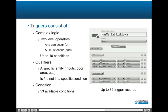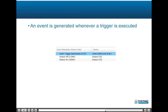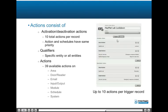An event is generated whenever a trigger is executed, informing the operator the action took place. Actions consist of activation and deactivation actions; the system supports up to 10 total actions per record. Actions and schedules have the same priority in the system when executing. Qualifiers include a specific entity or all entities, with 39 available actions on areas, door/reader, email, input/output, module, schedule, credential, and system. Action triggers may be created based on a specific credential being used, and the following actions can be set for various access granted and access denied events. To configure an action trigger for a credential, choose credential as the trigger, then choose the specific credential ID from the drop-down list, then choose the type of credential event to use as the trigger.